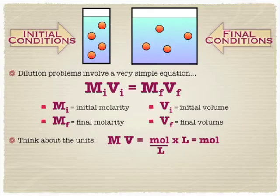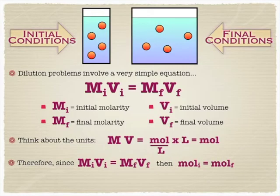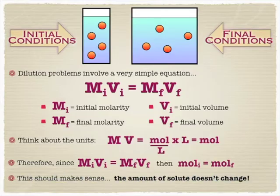And so really what this equation is saying is that in your initial and final conditions, you're really going to have the same number of moles. The only thing that's going to change is the volume that it's being dissolved in. And so the amount of solute doesn't change when you dilute something. You're just going to use this equation to calculate what's the new volume need to be so that the moles at the beginning equals the moles at the end with the new volume.